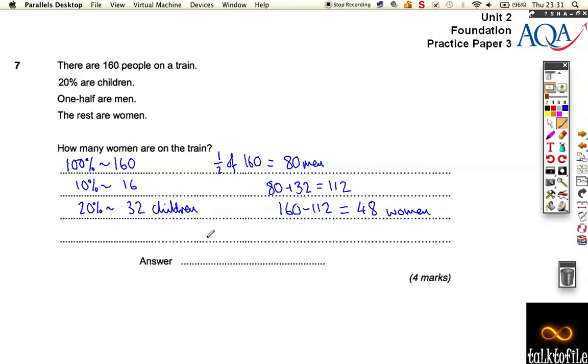Okay, four marks. The way it breaks down is you get one mark for the 20%, one mark for the men, one mark for combining them, and then one mark for successfully subtracting and getting the women. So it's 48, is the answer.